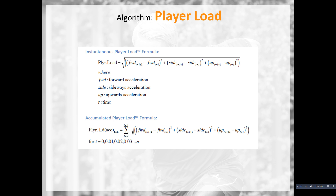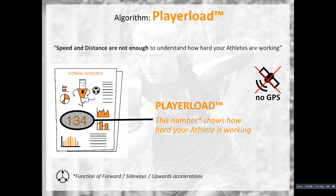Player load uses the up-down, forward-back, and side-to-side sensors in combination. It's one of our most widely used parameters — an arbitrary unit that gives one number attempting to represent how hard athletes are working in a session. Sometimes distance and speed don't cover everything you want to analyze, so player load was developed as a way of further enhancing your analysis.